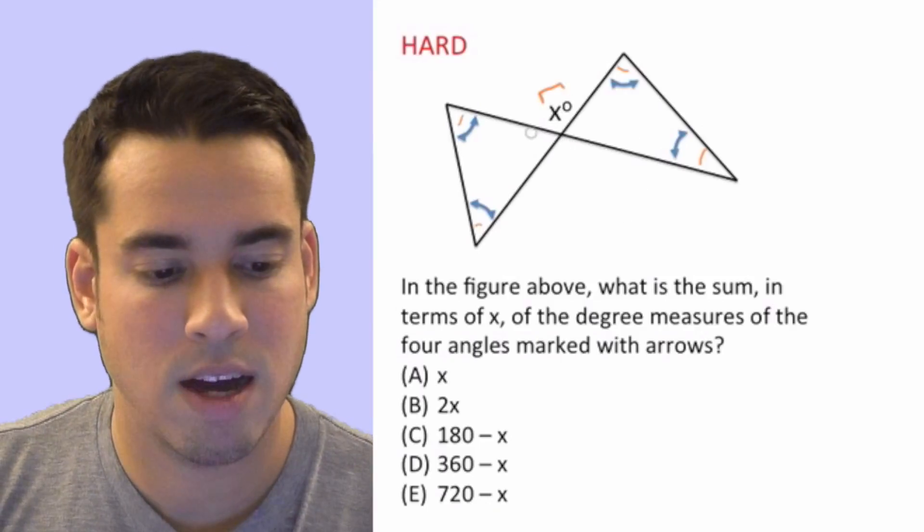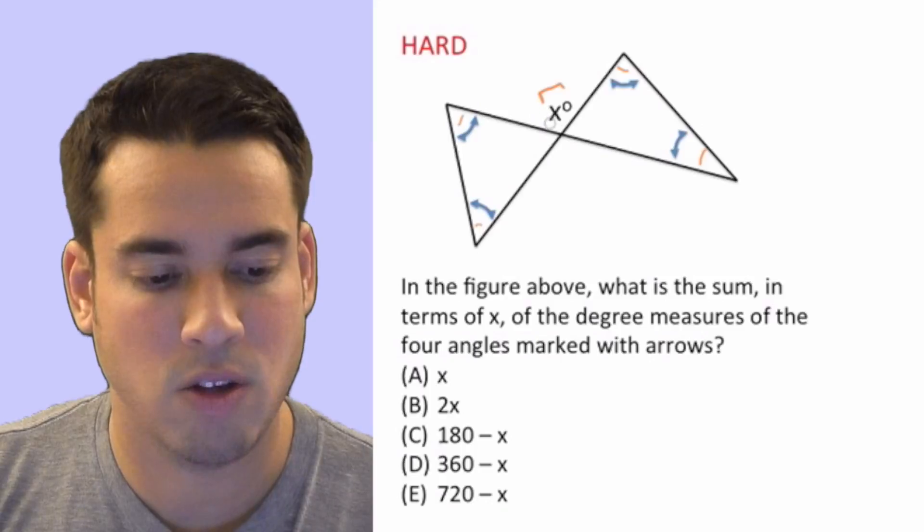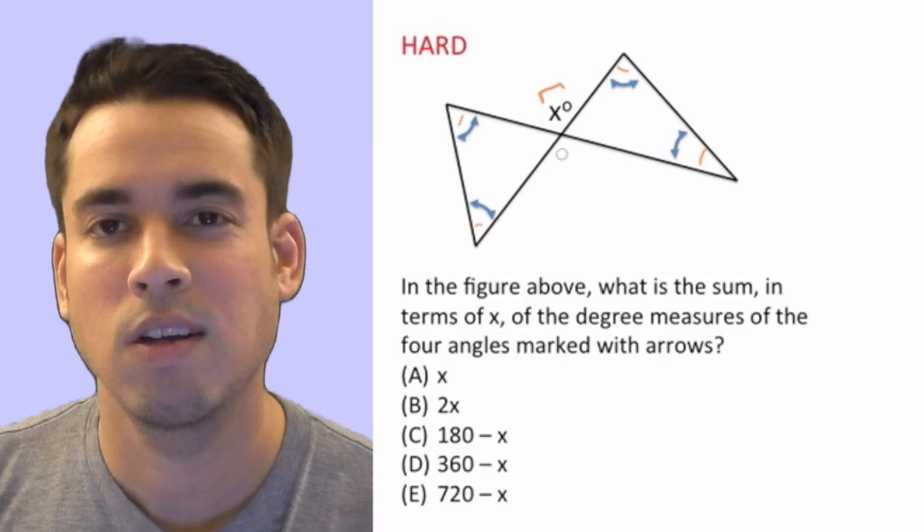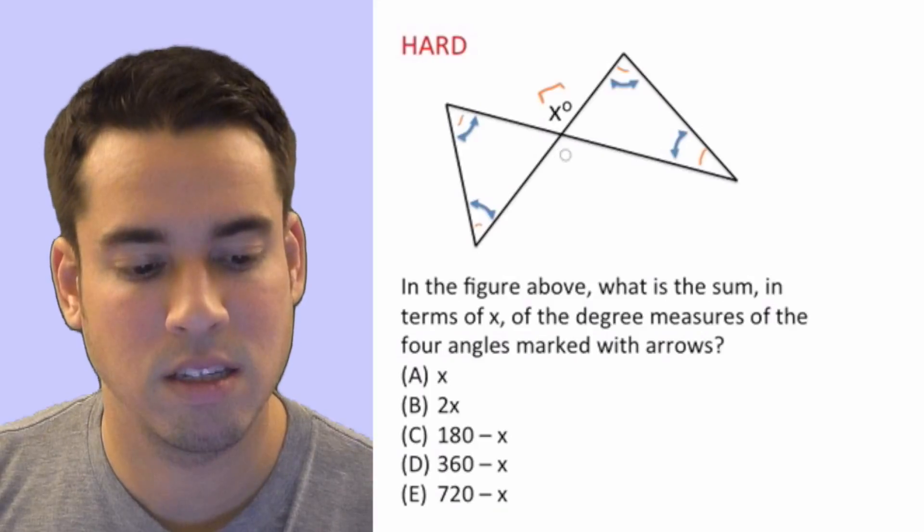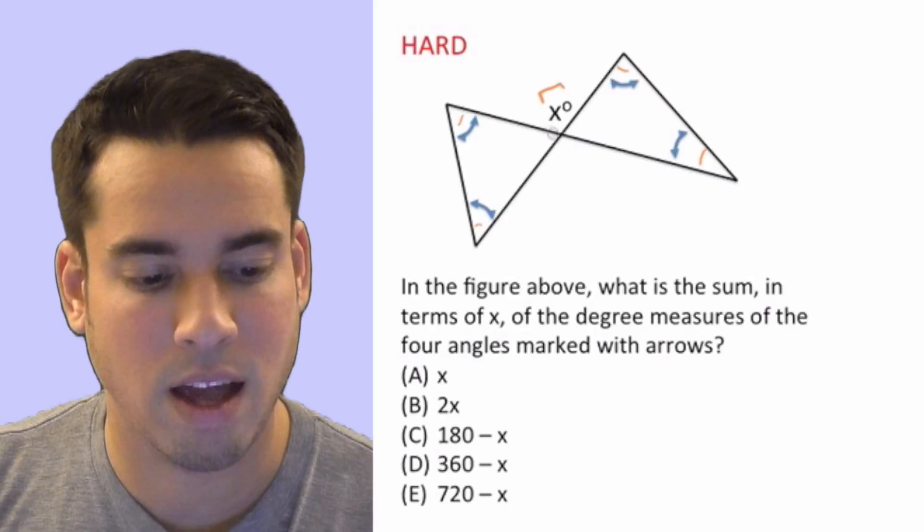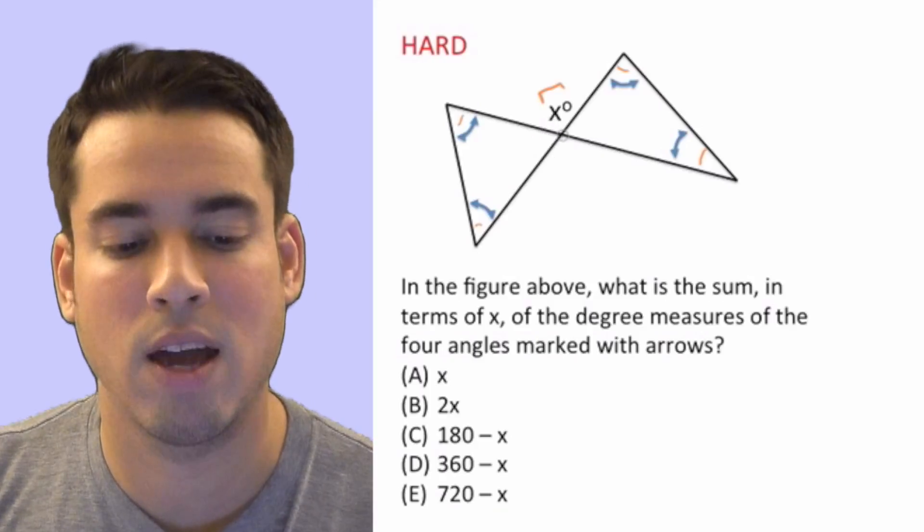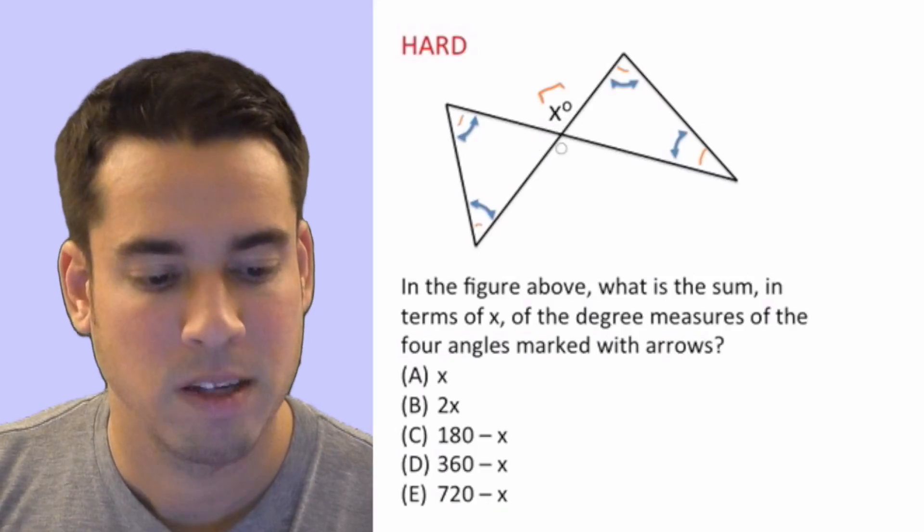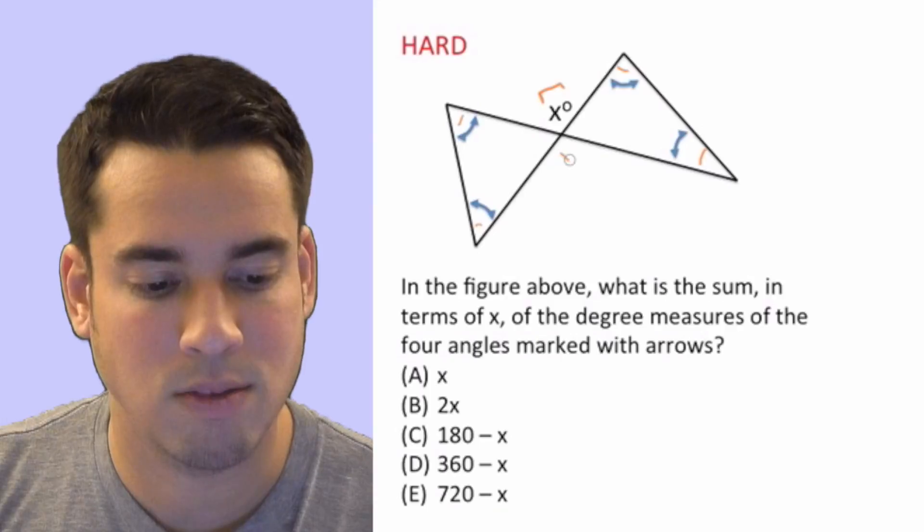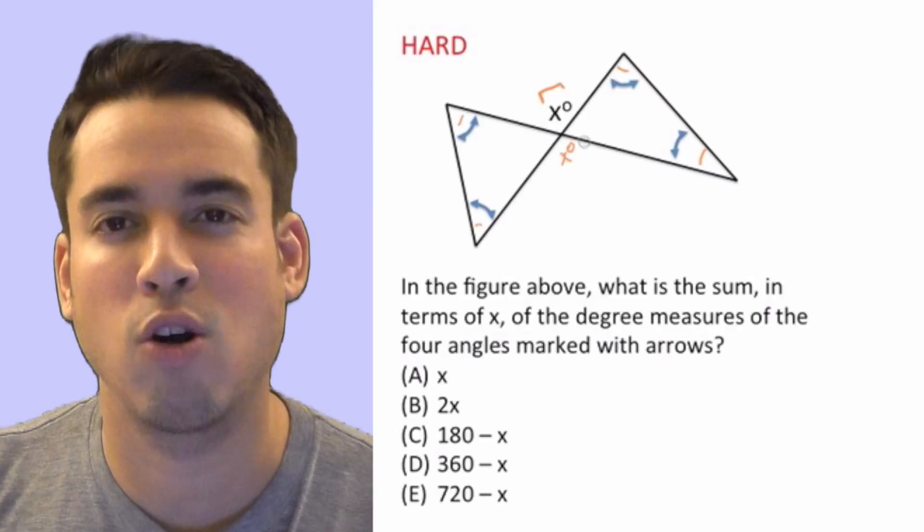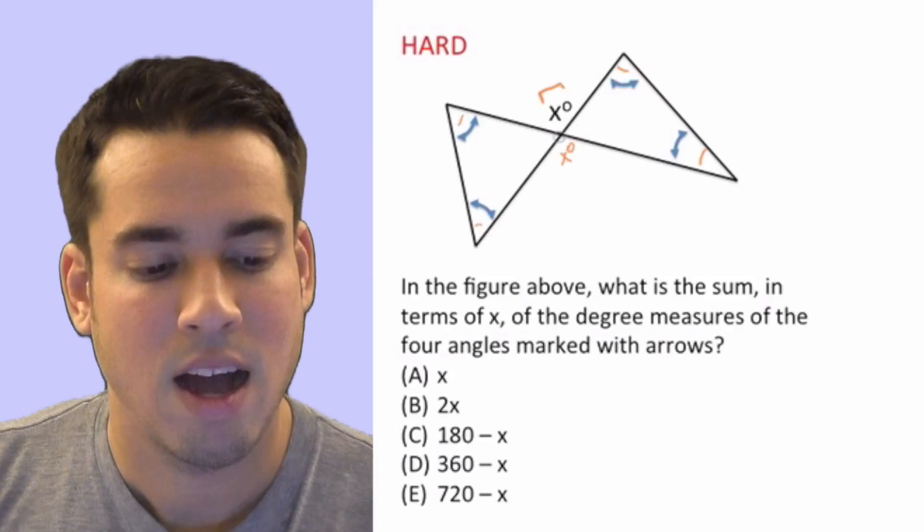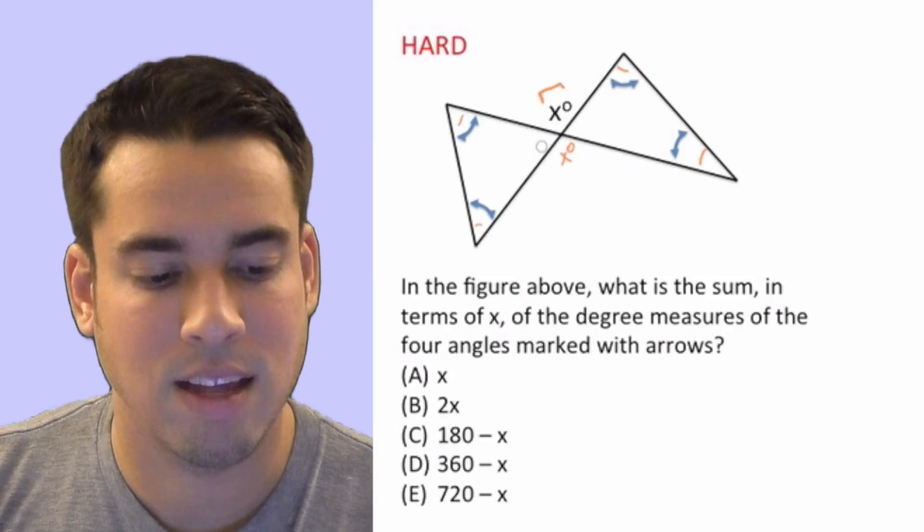First of all, we've got this angle x and what do we have opposite here? Do we know this angle? Well, actually we do because it is a vertical angle to x. A vertical angle is just when you have two lines that intersect, it's the opposite angles. So by that rule, this angle over here is the same, it's also x. Now we know that.